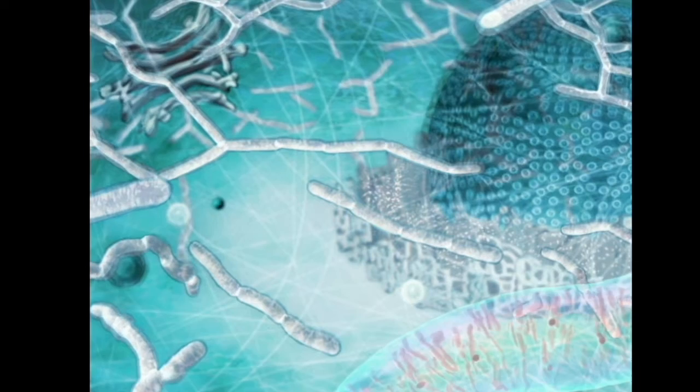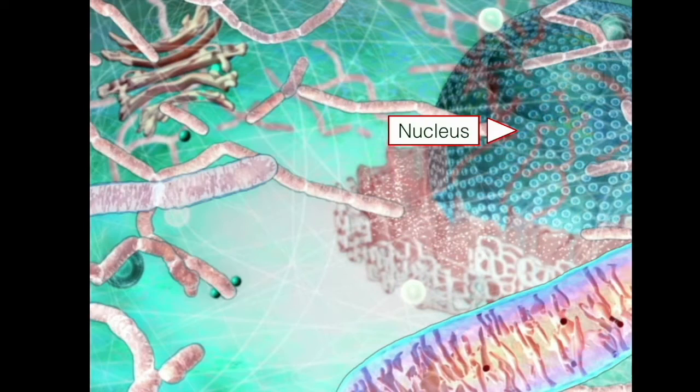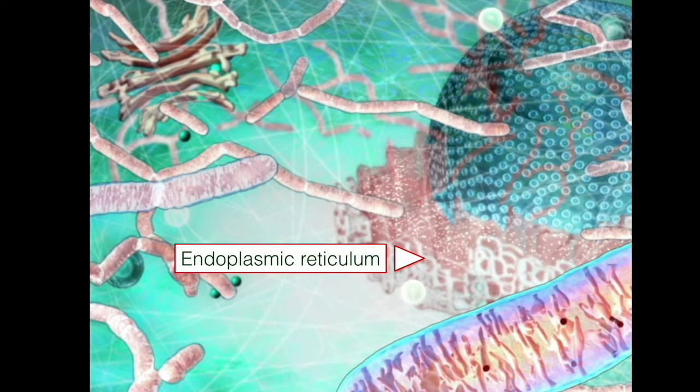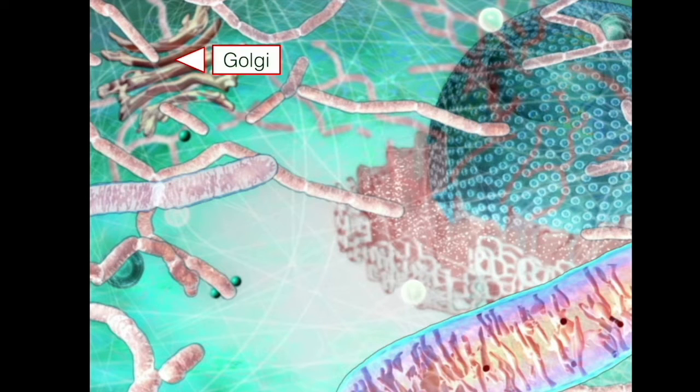The cell is divided into different compartments. Here's the nucleus, where our genetic material is stored and processed. Here's the endoplasmic reticulum, where proteins, lipids and other molecules are made and transported. Here's the Golgi apparatus, the post office of the cell.